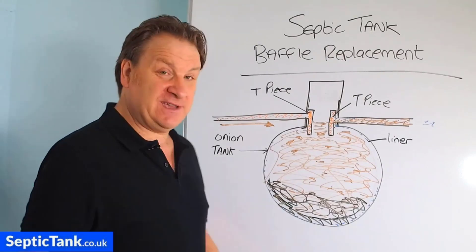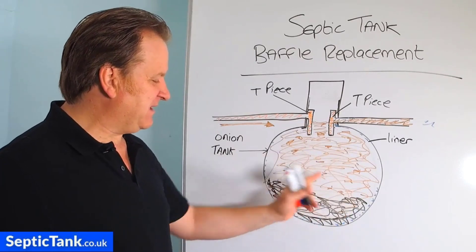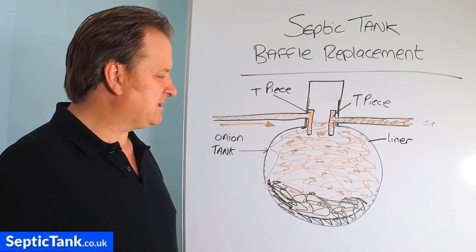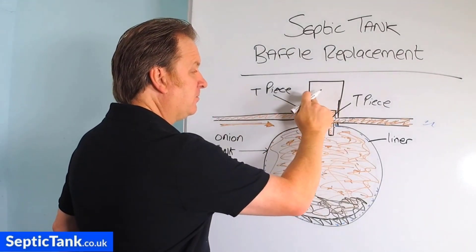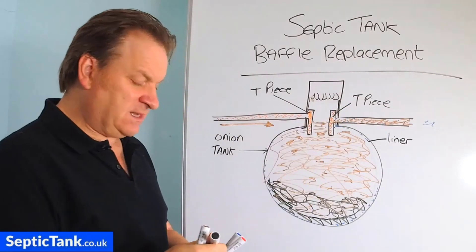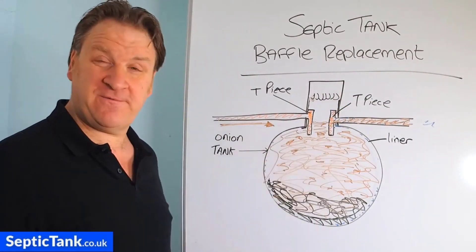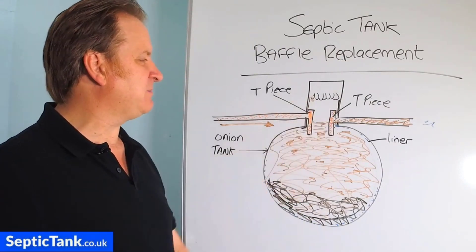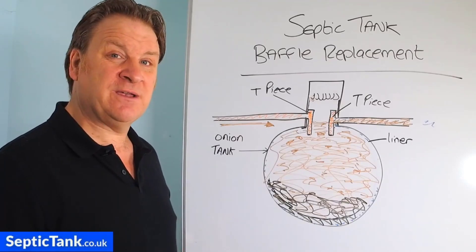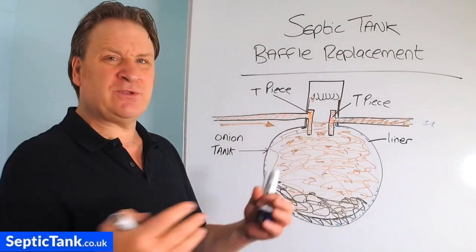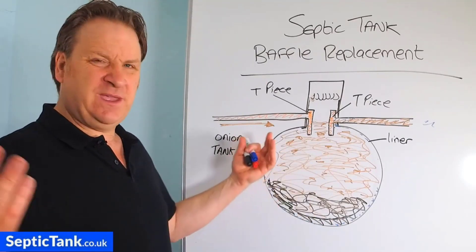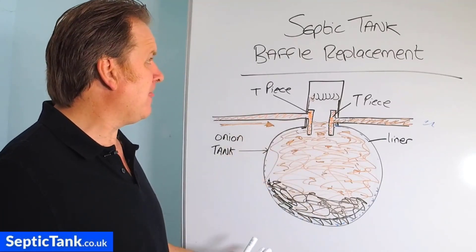With onion tanks there really isn't a happy ending, because once the black liner has sagged or fallen to the bottom, it's virtually impossible to raise it and reattach it to the hooks. When I first got into the septic tank business 20 years ago, I found this to be a very common problem. Once the black liner has split, torn, stretched, and become saggy, you just can't fix it. To attempt it you'd have to cut the neck off and get down inside — costing you one to three thousand pounds. If you consider you could buy an onion tank for six or seven hundred pounds, it mathematically and financially makes no sense.